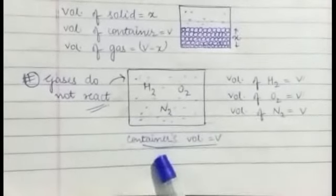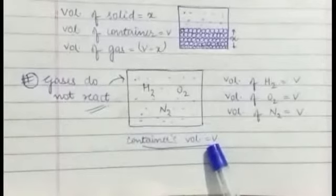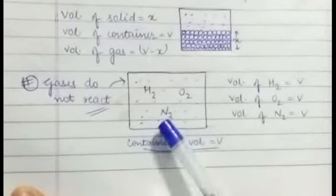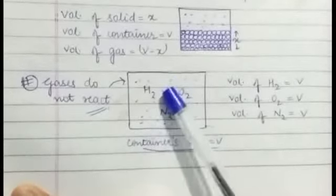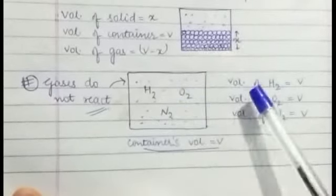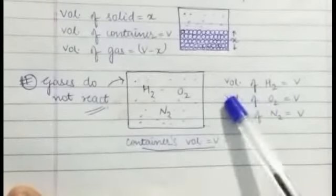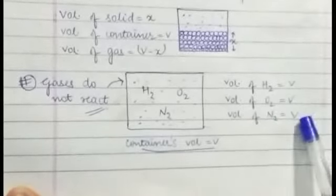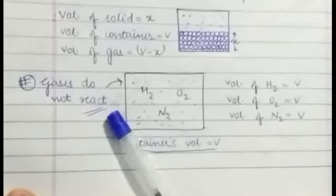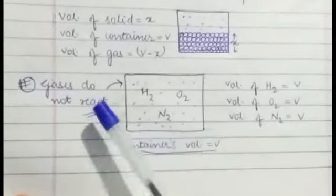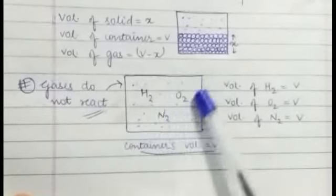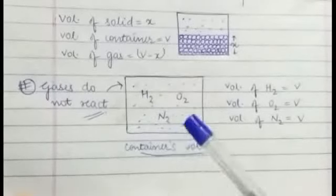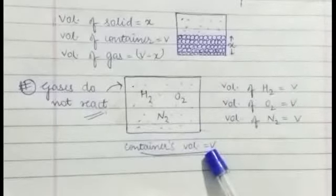Now we will see that our container of volume V has gases in it: Hydrogen, Oxygen and Nitrogen. We might think that three of them have volume V by 3, V by 3, V by 3. In fact, teeno ka volume V hai, which is the container ka volume. The volume of Hydrogen gas is V and Oxygen and Nitrogen is also V. The condition is that the gases will not react. If the gases will react, there will be a difference in the volume. But in this case, the gases will not react, so teeno ka volume equal hai.